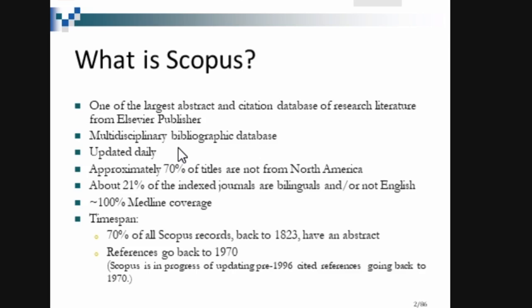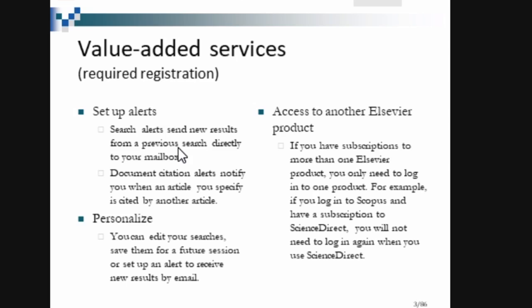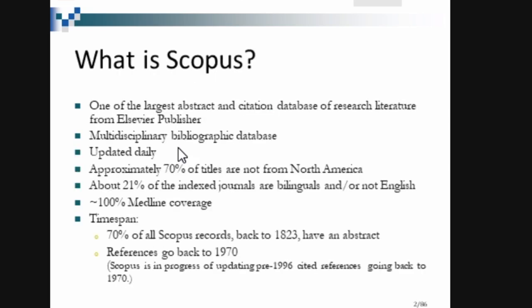If your institution subscribes to it, you will get full text; otherwise you will not. Or if the article is available in open access format, you will get full text. Scopus is updated daily. Approximately 70% of the data are from North America, and 21% of the indexed journals are bilingual — not purely English. The time span goes back to around 1823, though the span varies depending on the subscription.